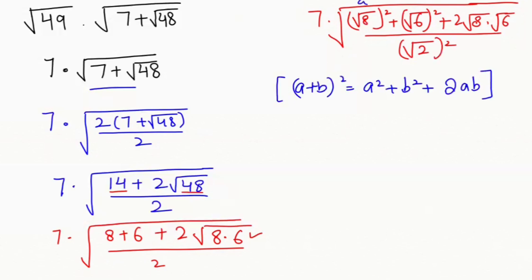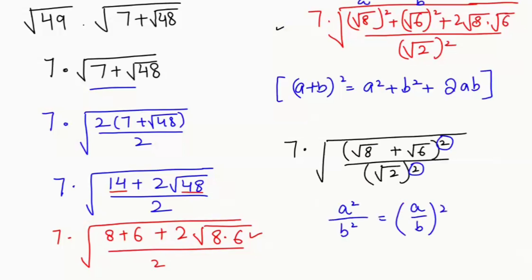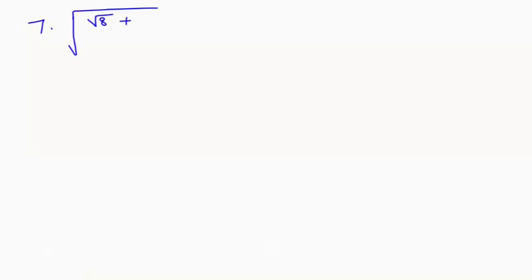So the a and b values here give us 7 times root of (root of 8 plus root of 6) whole squared over (root of 2) whole squared. Now we have a common power on the numerator and denominator, so I apply the exponential rule that a squared over b squared equals (a over b) squared. This gives us 7 times (root of 8 plus root of 6) over root of 2, whole to the power of 2.